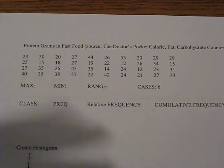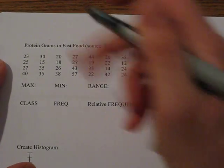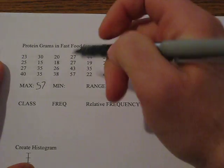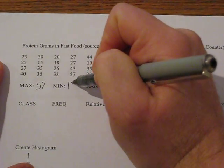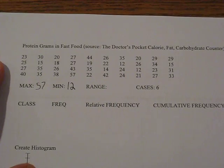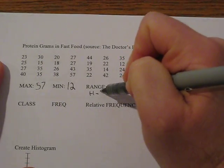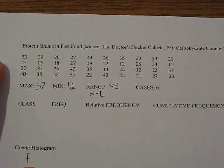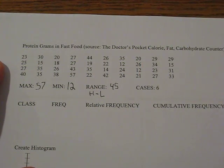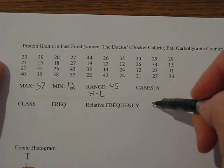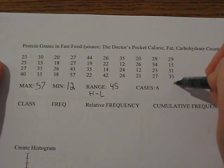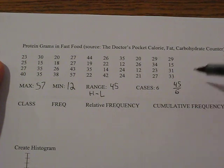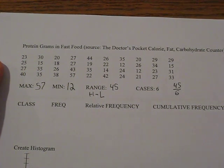We'll start by doing what we did in the previous video. We're going to look for a maximum, which is 57, and the smallest amount of protein in the fast food data, which is 12. The range between the two of them, or high minus low, is going to be 45. Then we're going to take the book's suggestion and do this in six cases. We'll take our range and divide by the number of cases, which tells us how big the interval should be between each bar.